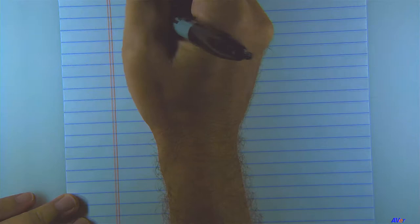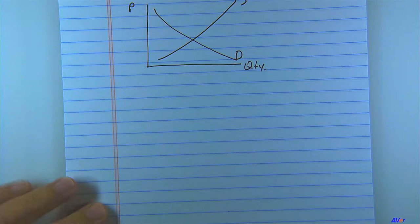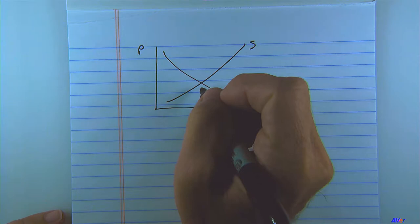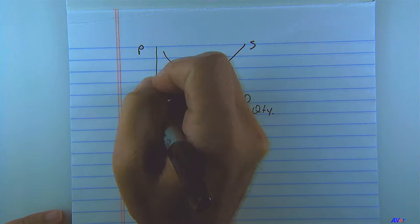Hello everyone. This is a reshoot of class number 16 that deals with externalities. Let's briefly review what we've done up until this point. We've been looking at supply and demand — here's our quantity, here's our price, here's demand, here's supply. At this point of intersection we have some equilibrium price and quantity.